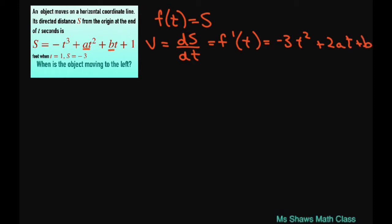Now we're going to set up a system of equations. We can do that by first looking at S. We know S is negative 3 when t is 1. So substituting in 1, we get negative 1 plus a plus b plus 1. This gives you a plus b equals negative 3, because the ones cancel. I'll call this equation 1.